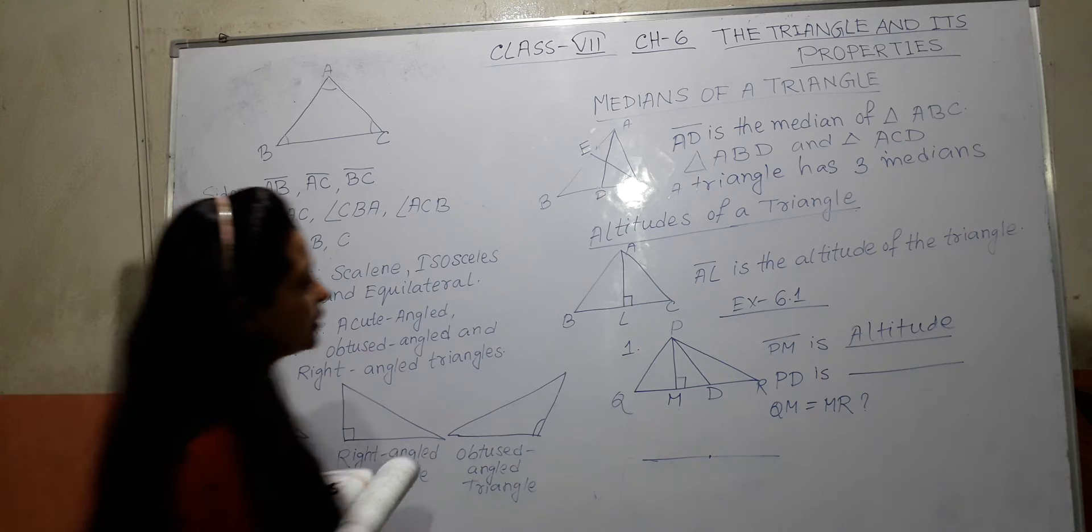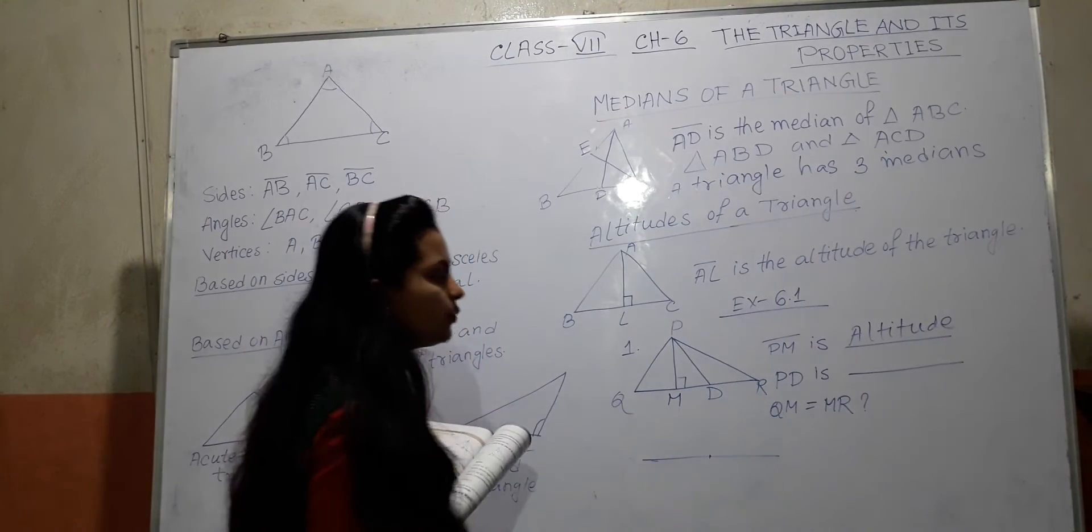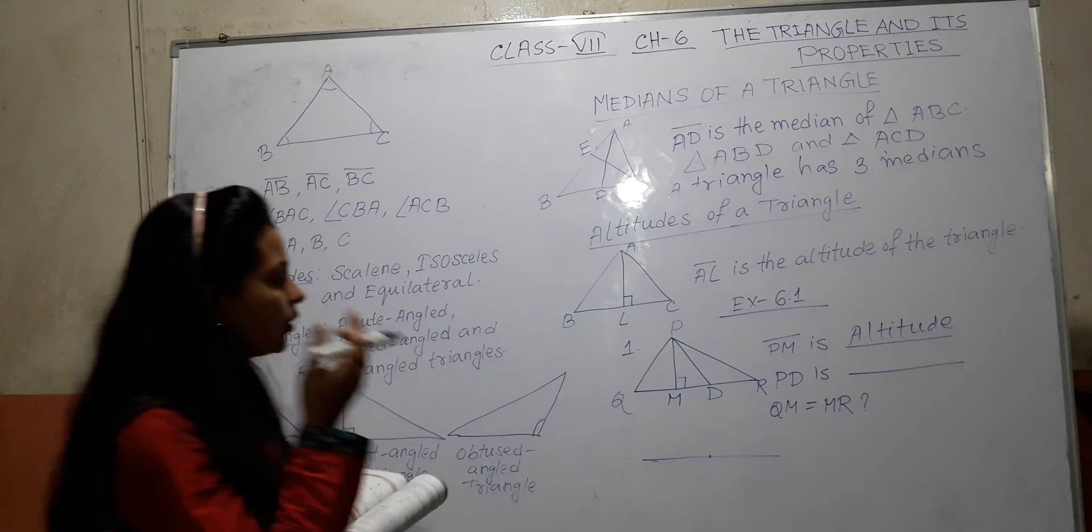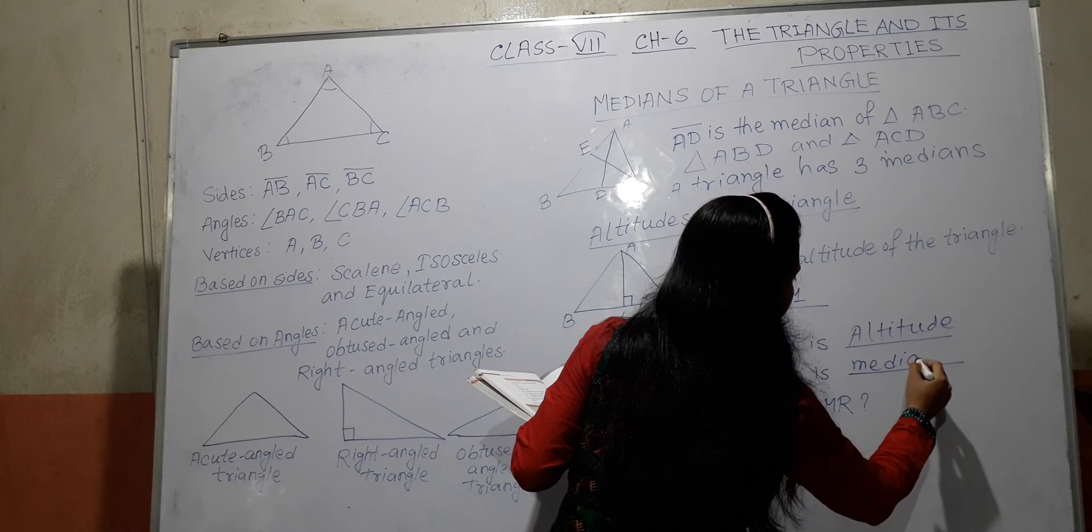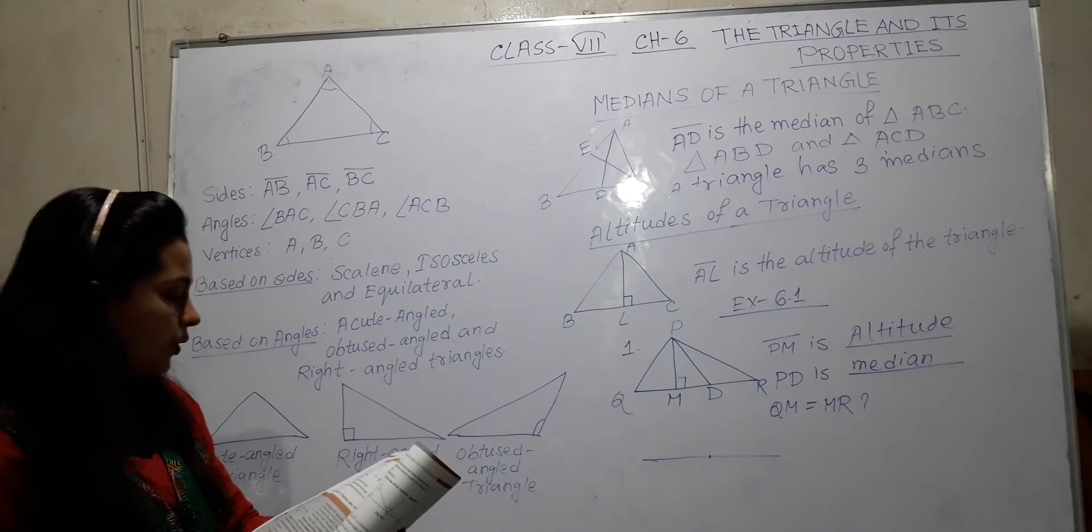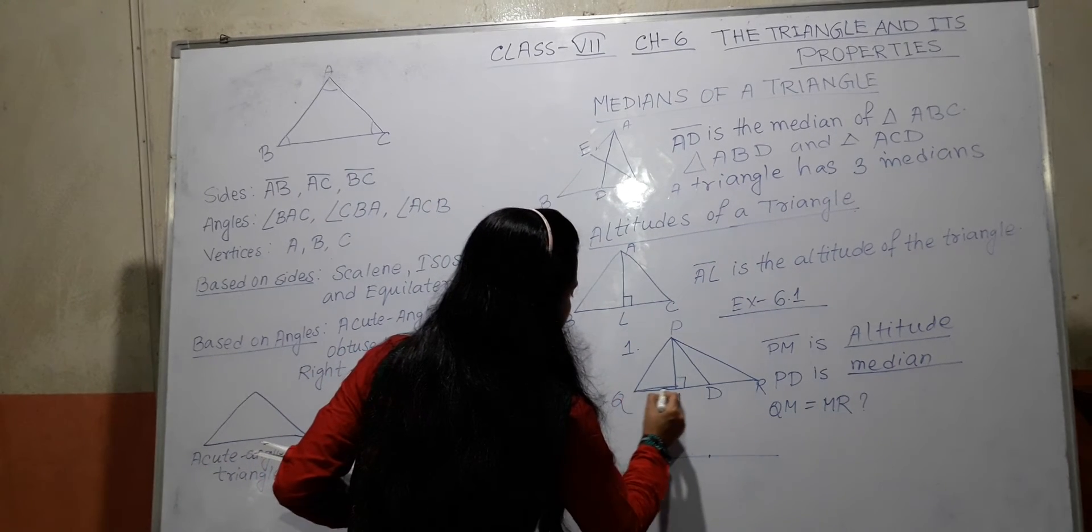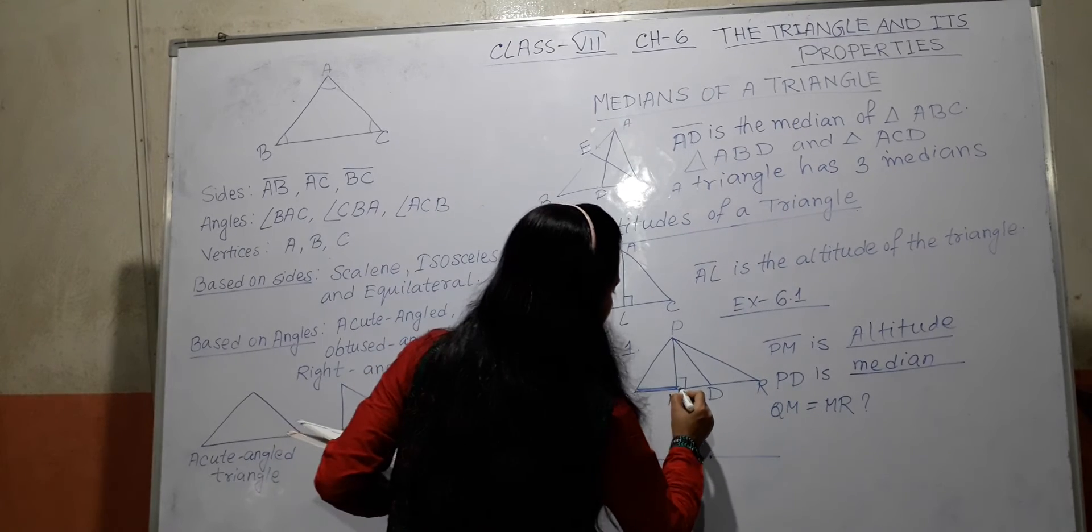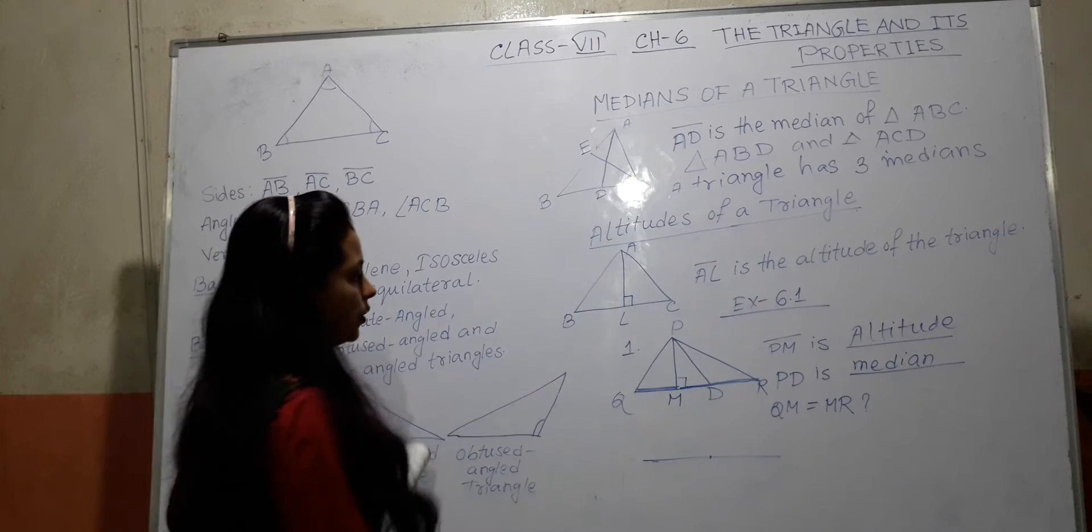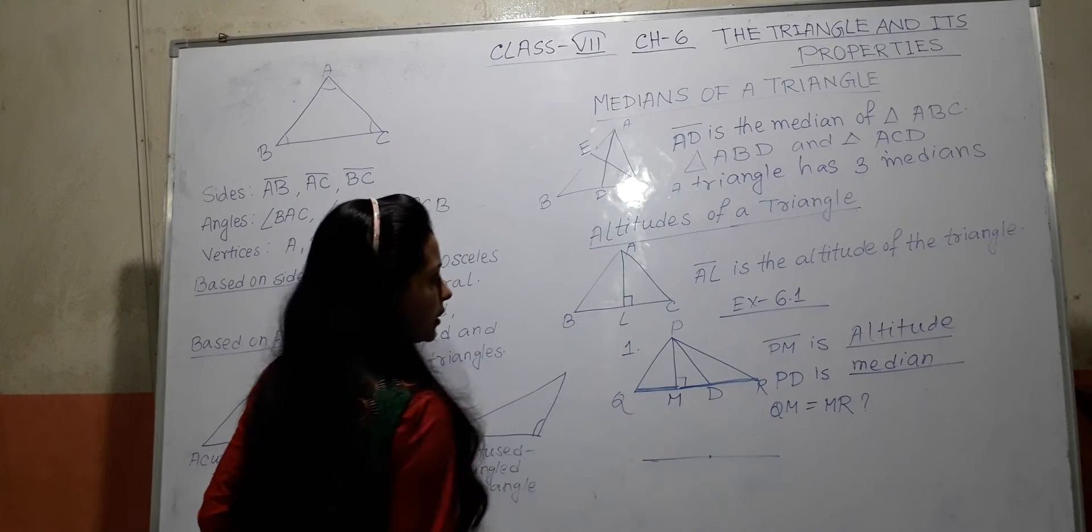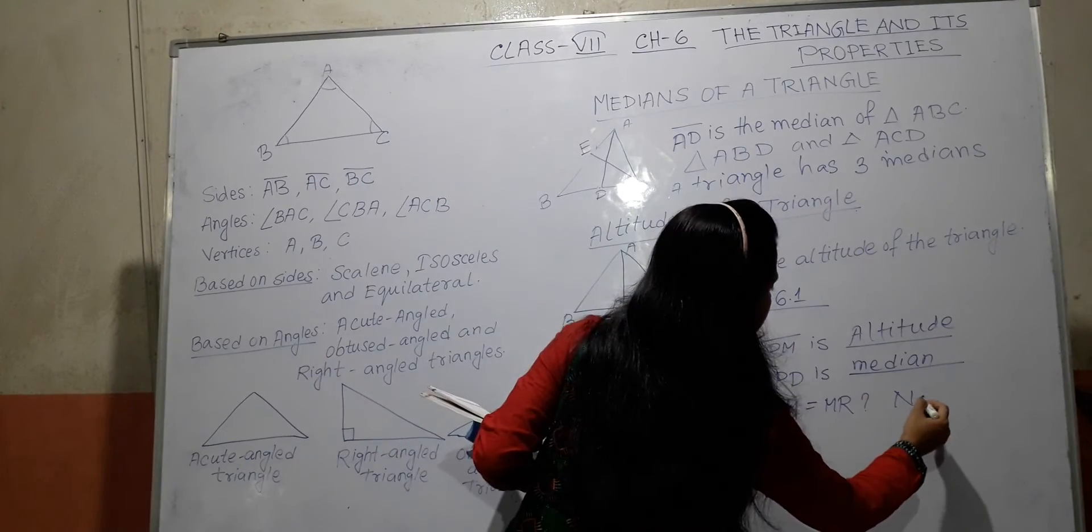Next question says QM equal to MR. QM means this portion equal to MR, this portion. Is it true? No, because D is the midpoint. M is not the midpoint. So this is not true. Your answer is no.